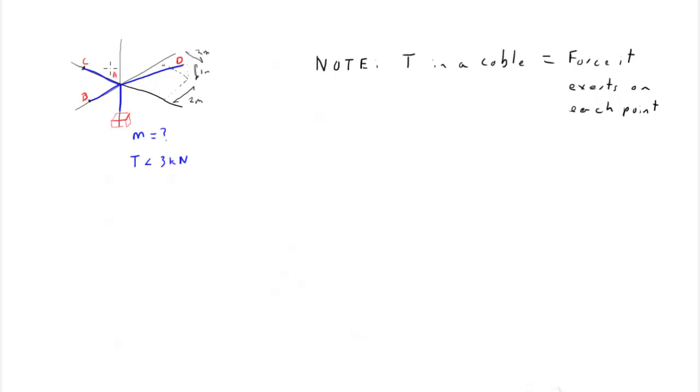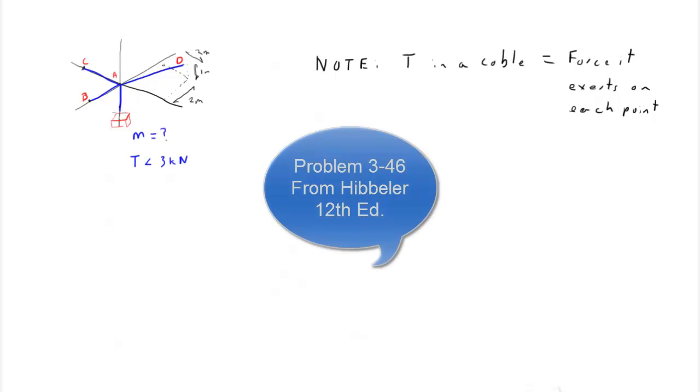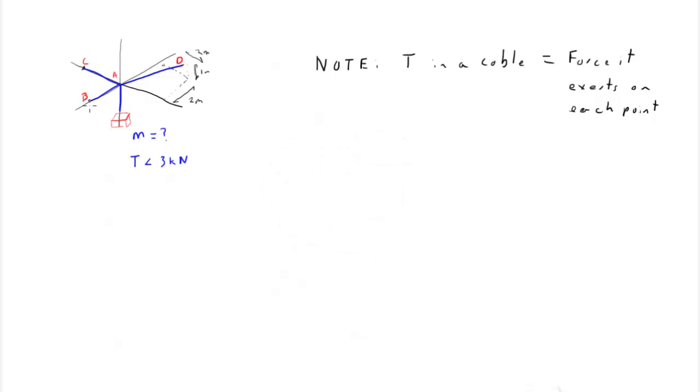So in this problem, we have a crate which is suspended by a cable from point A. Point A is actually a ring here in space. It's connected back to a point on a wall by cable AB, to a point on a wall by cable AC, and to a point on another wall by cable AD. So the points B, C, and D are all fixed at a wall. I just haven't drawn them here.